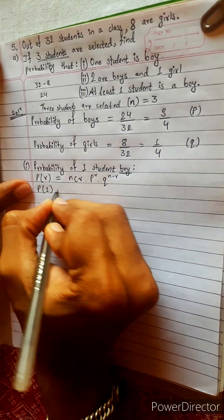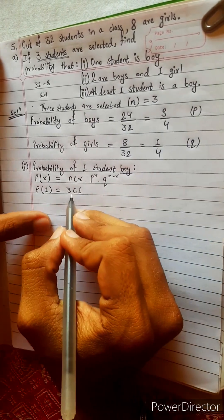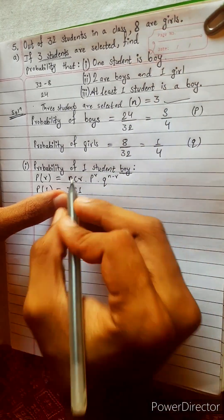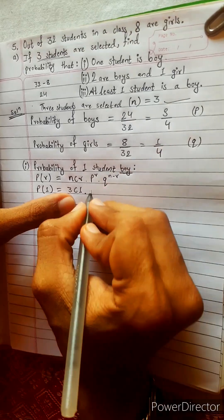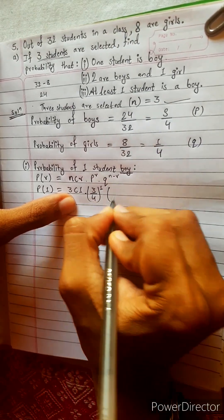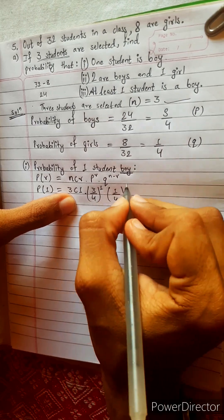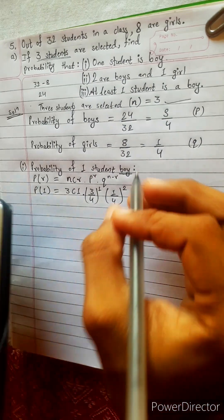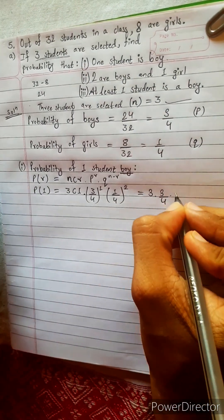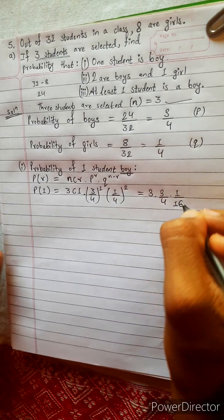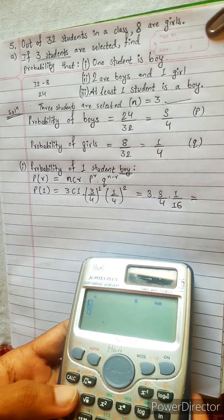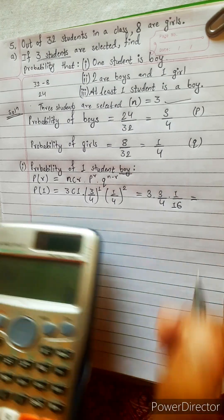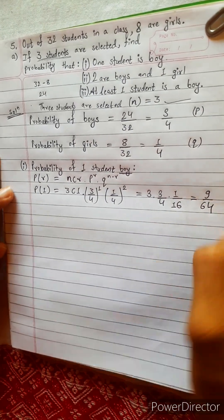For P1, the formula gives us 3C1, because N equals 3 and R equals 1. P is 3 by 4 to the power 1, and Q is 1 by 4 to the power 3 minus 1, which is 2. So directly: 3C1 is 3, into 3 by 4, into 1 by 16. Simplified: 9 by 4 into 16, which is 9 by 64. Simply write 9 by 64.